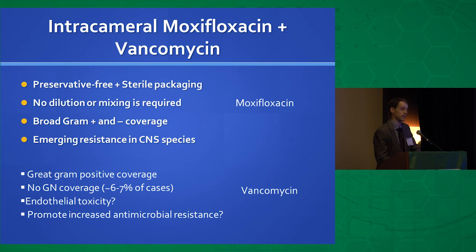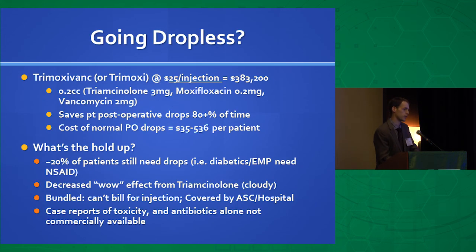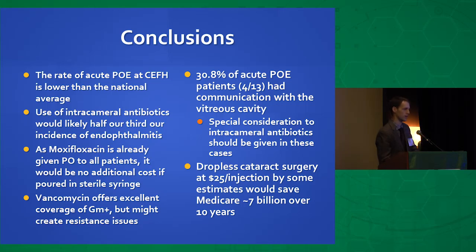Regarding intracameral moxifloxacin and vancomycin: moxifloxacin has both gram-positive and gram-negative coverage, but the rate of coag-negative staph resistance to fluoroquinolones is increasing, making fluoroquinolone-specific cultures important. Vancomycin treated every single one of the 13 patients in our subset. Another option is dropless cataract surgery — Imprimis sells TrimoxyVanc at $25 per injection, and 80% of patients won't need additional drops. Downsides include decreased initial vision from the steroid and reports of toxicity with improper dilution.